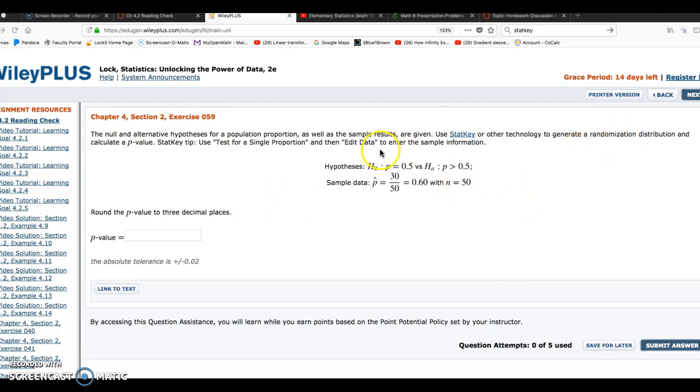So in this problem, we're going to test the hypothesis H0 that p, our population proportion, is 0.5. And the alternative hypothesis is that p, the population proportion, is greater than 0.5, or 50%.